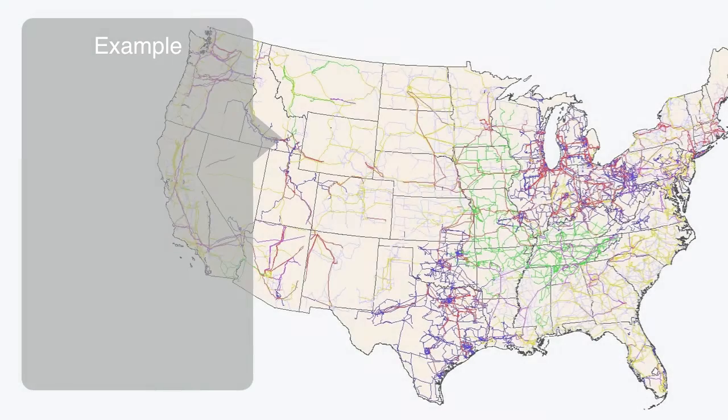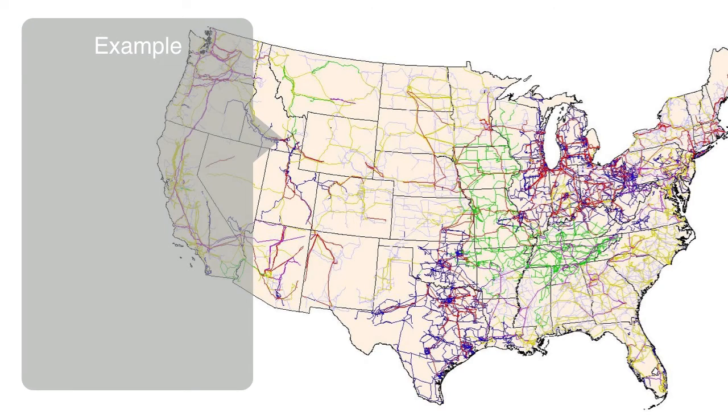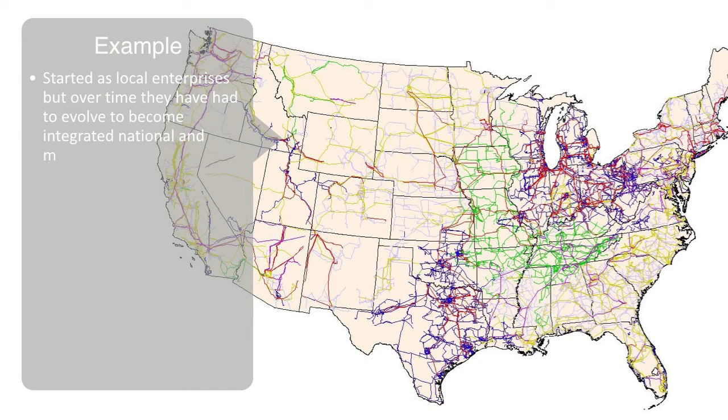This map shows the continental US power transmission grid, consisting of about 300,000 kilometers of line, operated by approximately 500 companies. Most power grids in Western Europe and the United States started out as local enterprises, but over the course of time, due to demand, they have had to evolve to become the integrated national and multinational networks that they are today.